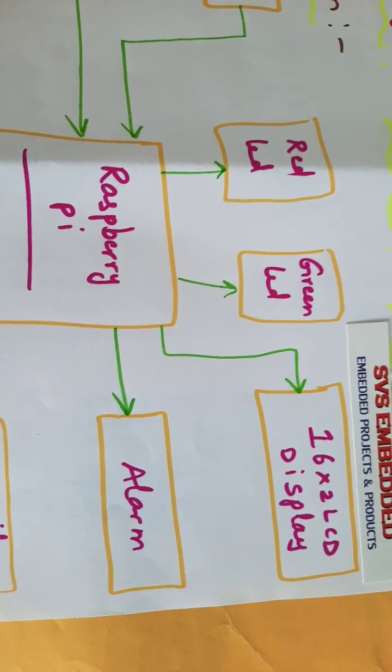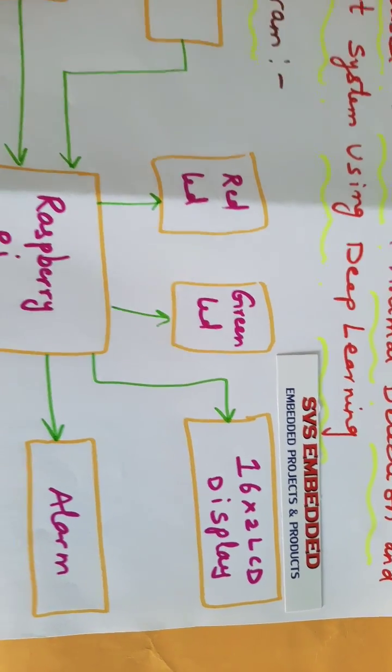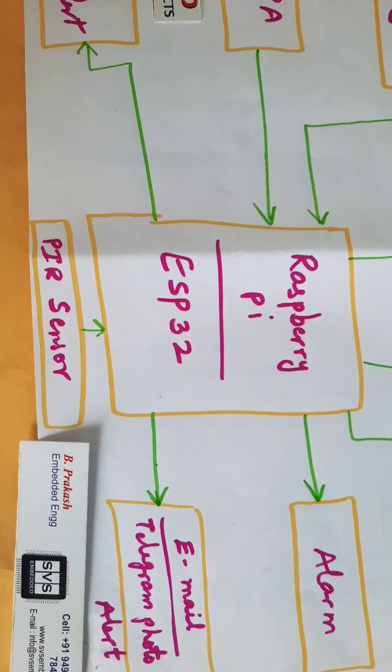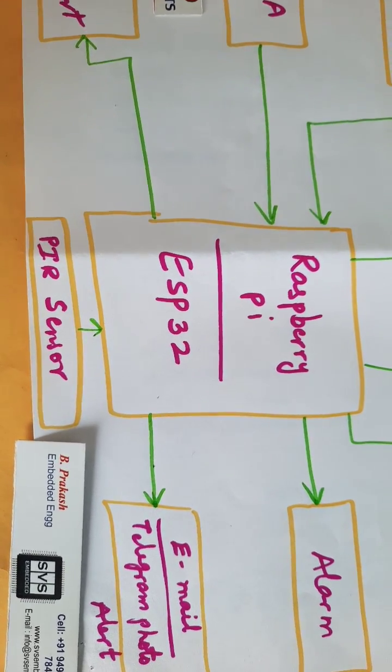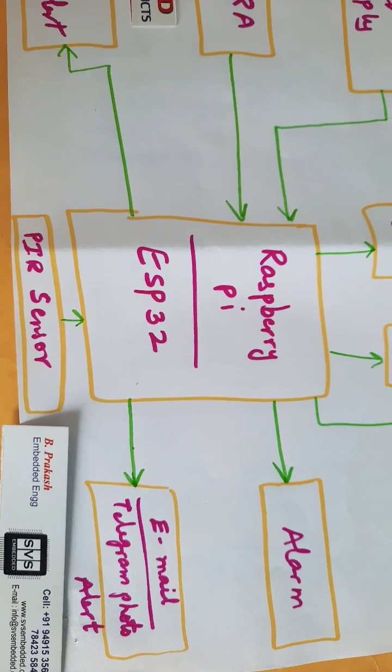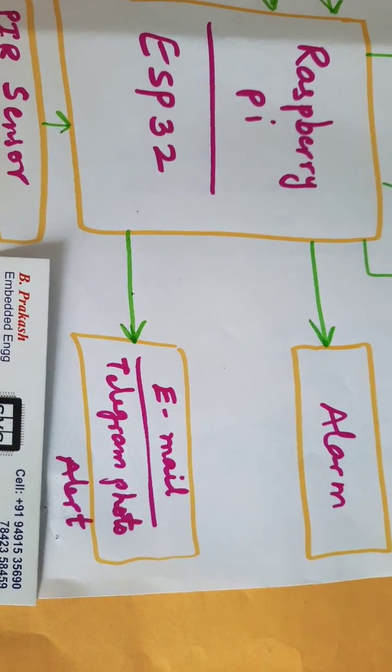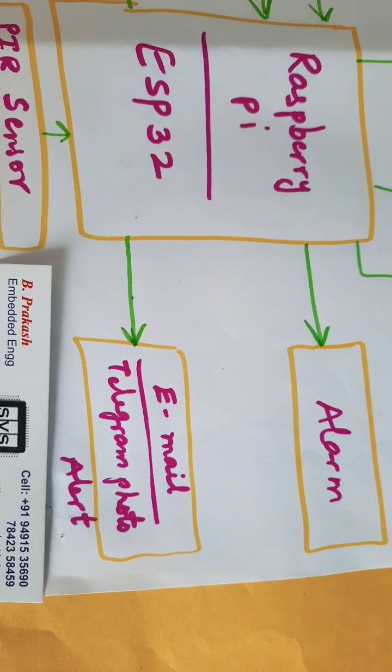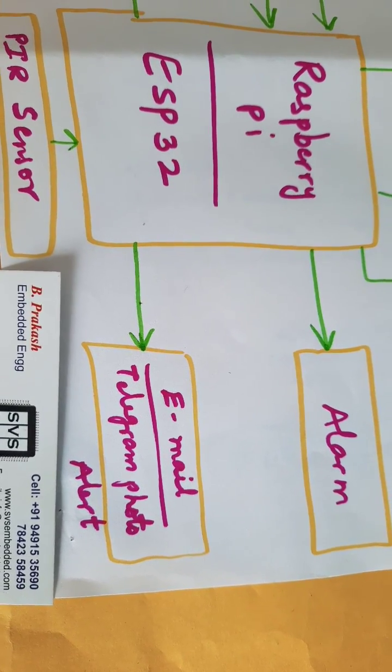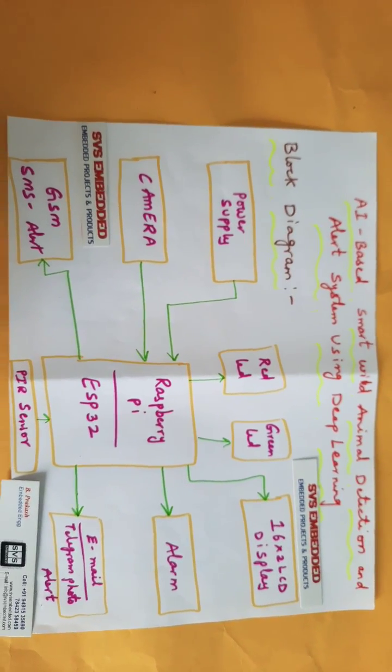16x2 LCD display to display the animal name. PIR camera - proximity infrared detector camera - it will detect any human body, motion body, movable body, or any animal. We are going to do email alert for Gmail, Telegram photo alert. It will send the exact photo of which animal it is. This is our block diagram of the project.